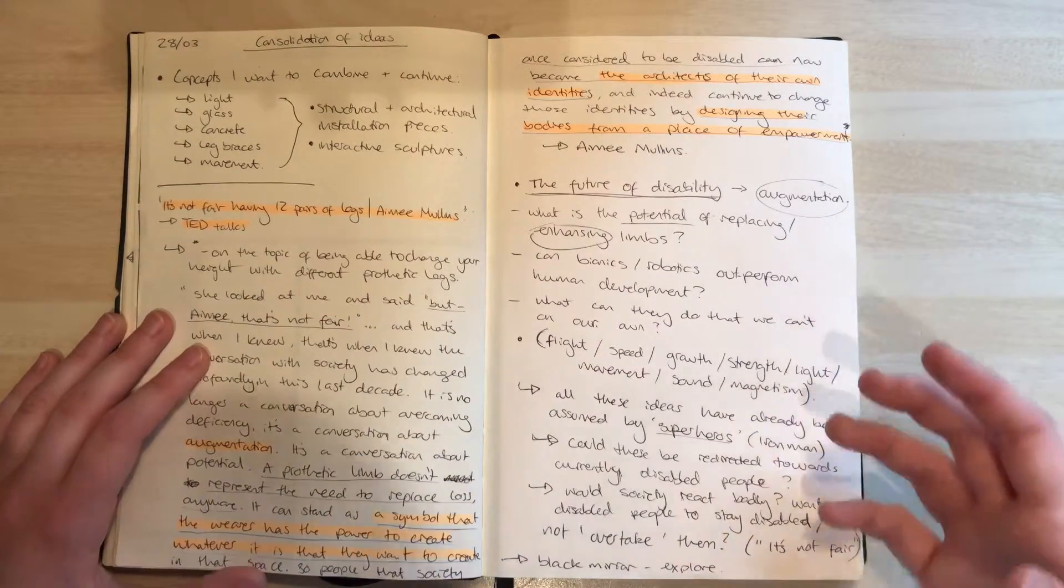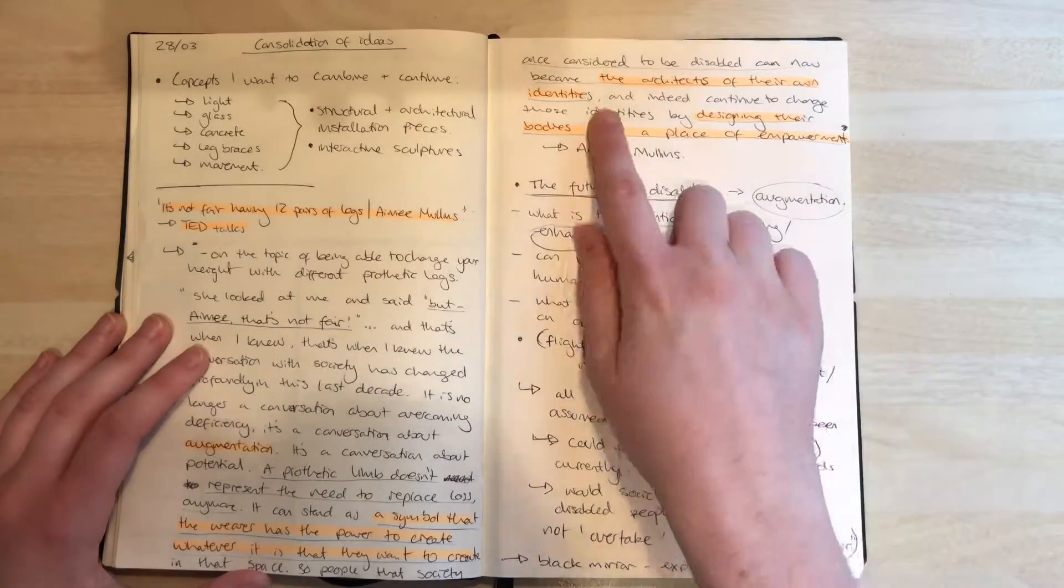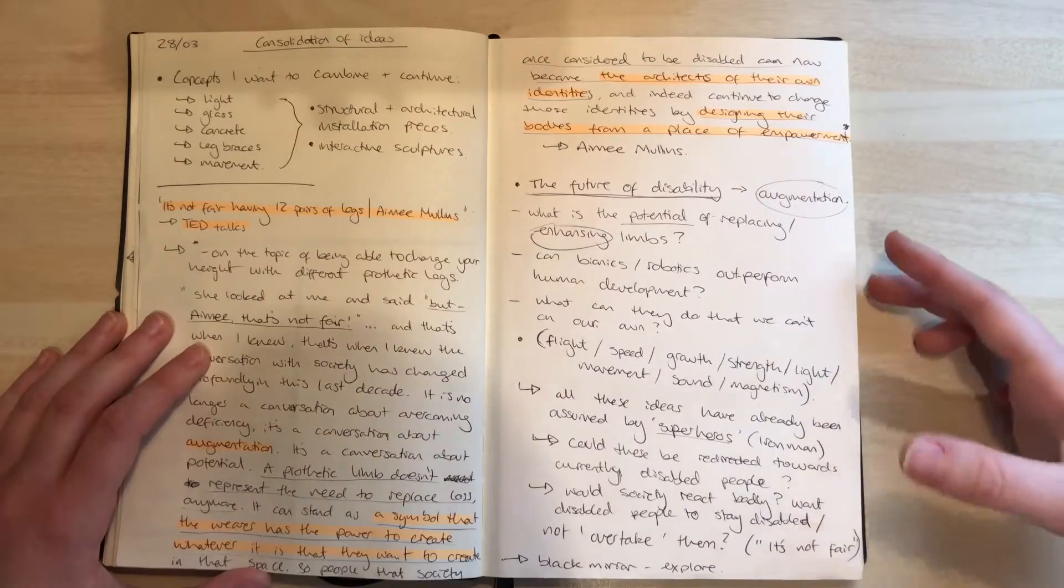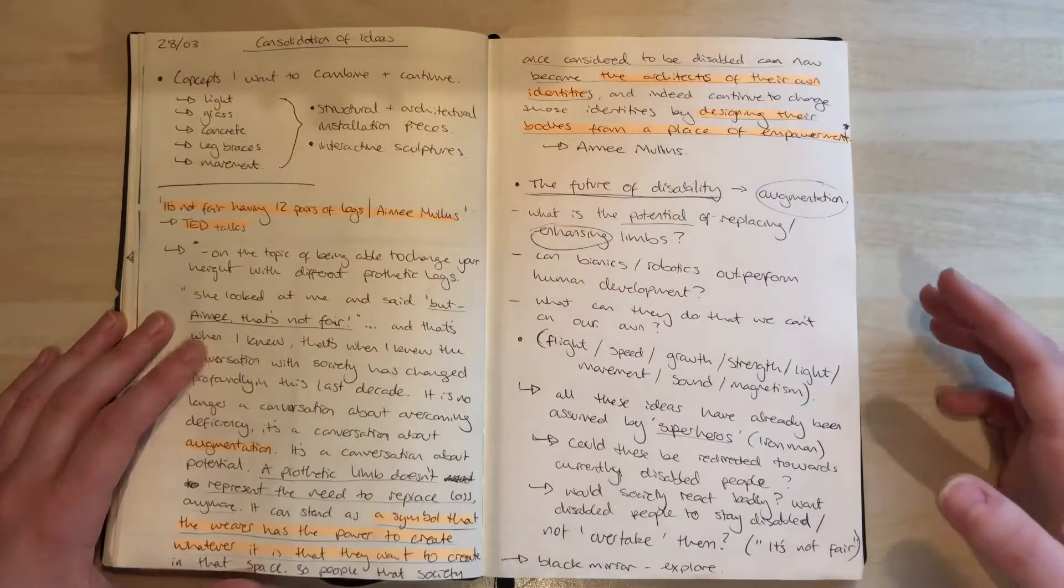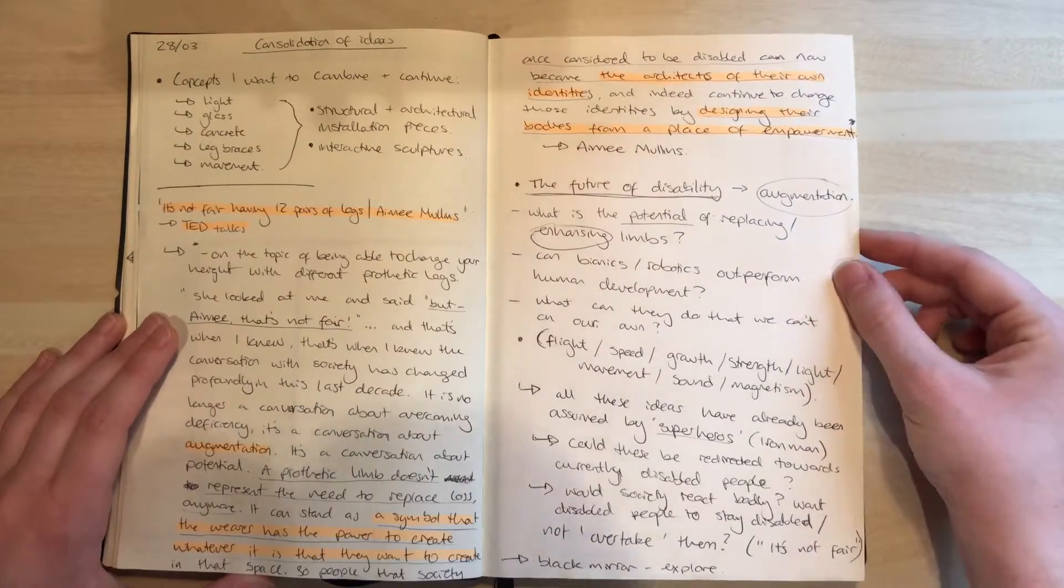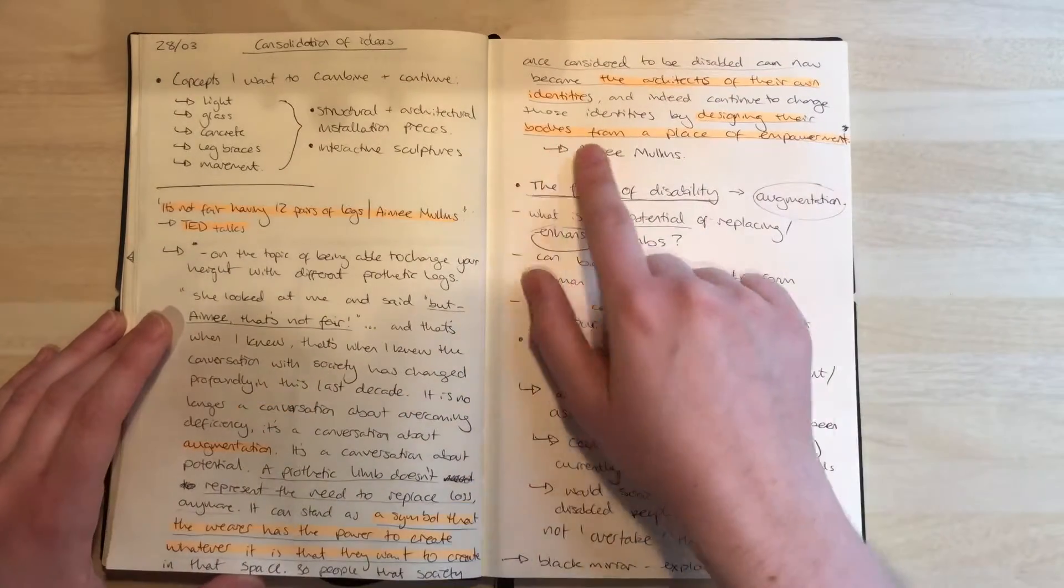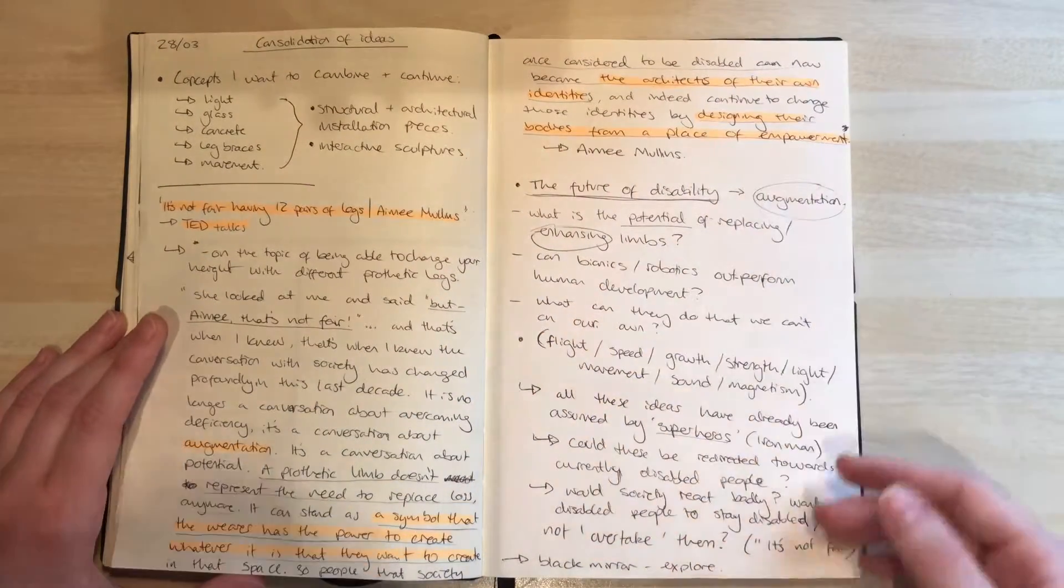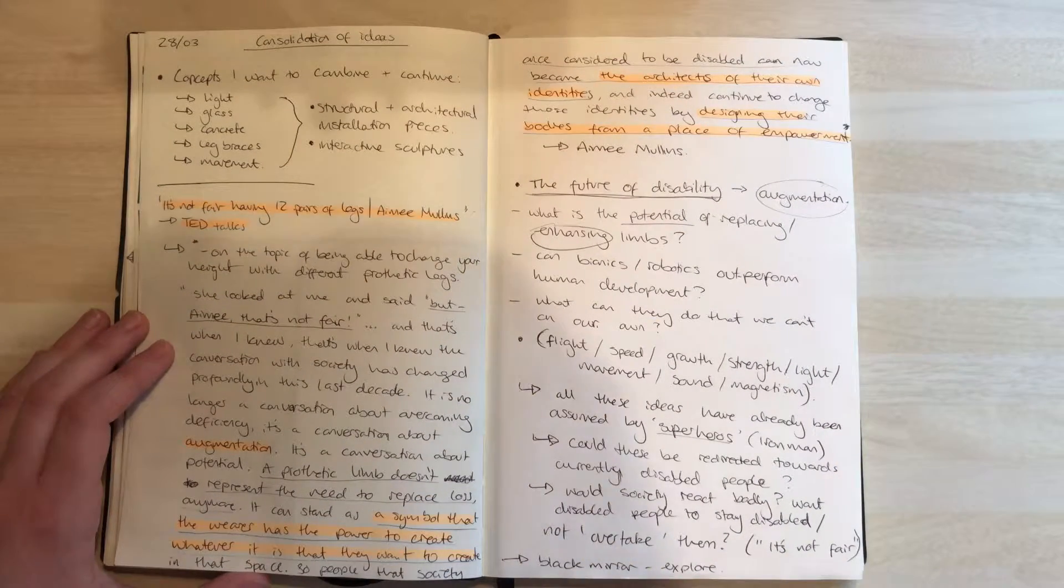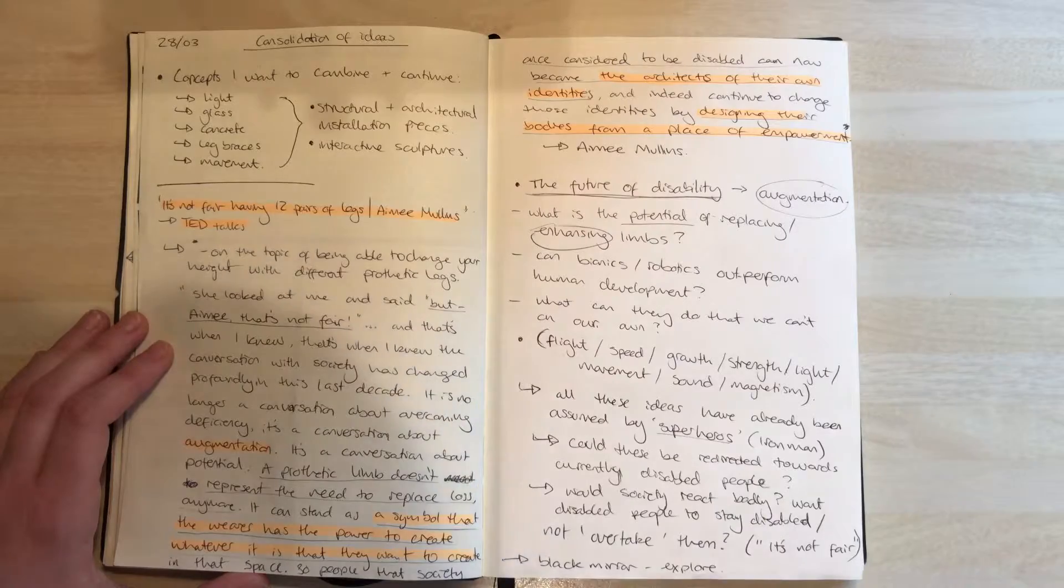And things that I took from this were phrases like the architects of their own identities, relating to disabled people being able to choose how they present themselves, having their autonomy returned to them and not taken away from them, designing their bodies from a place of empowerment. Again, this is going towards being in control of yourself and being able to do the best by yourself.